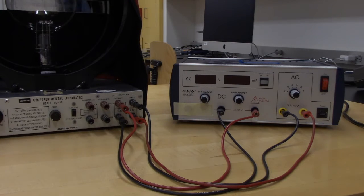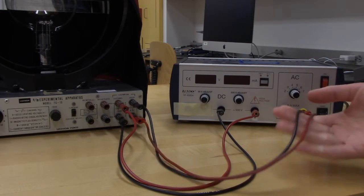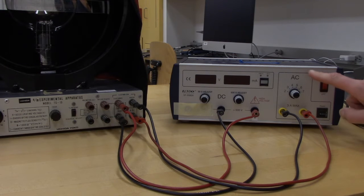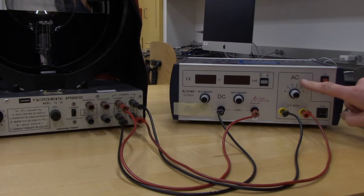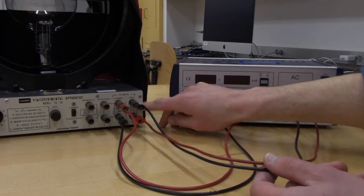We start first with our discharge tube power supply. We have two sets of wires coming out of here. One of them is for the AC power supply and these are leading into what is called the heater.